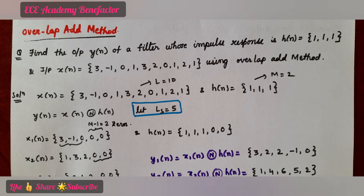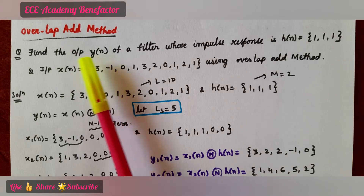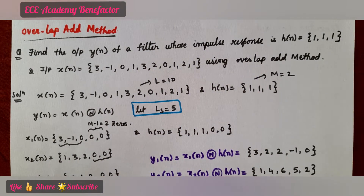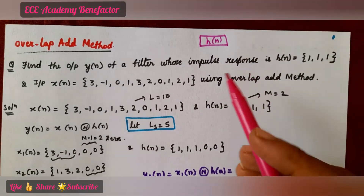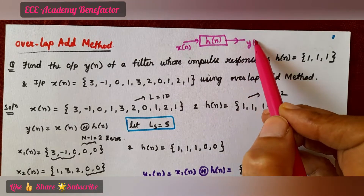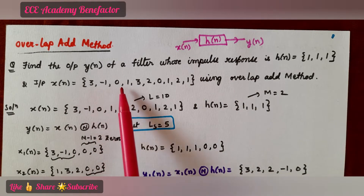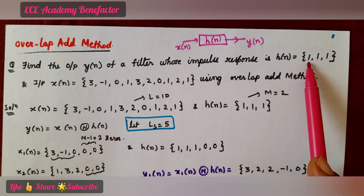This topic comes under circular convolution when the duration of x(n) is of long duration. Find the output response y(n) of a filter whose impulse response is h(n). x(n) is given as {3, -1, 0, 1, 3, 2, 0, 1, 2, 1} and h(n) is given as {1, 1, 1}.